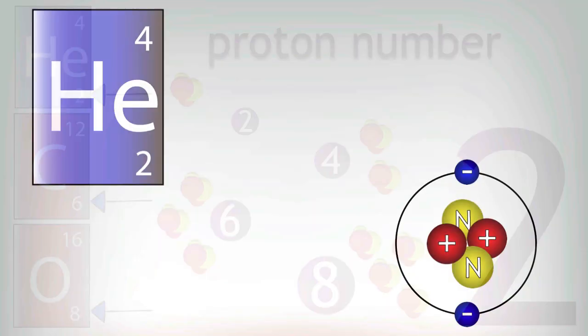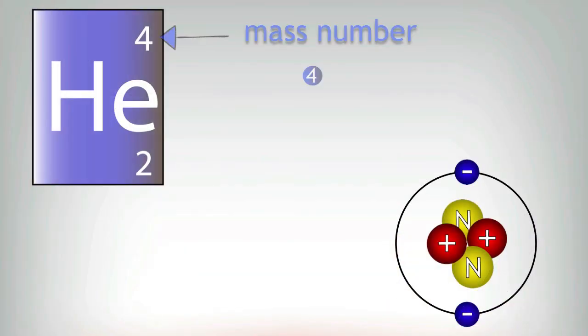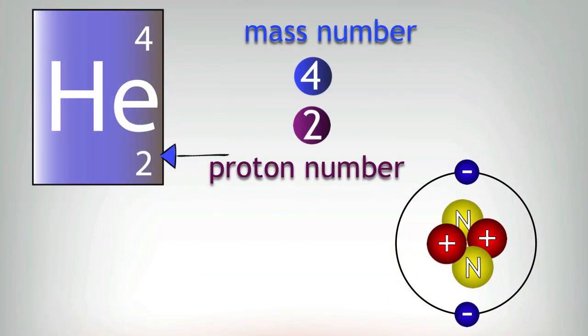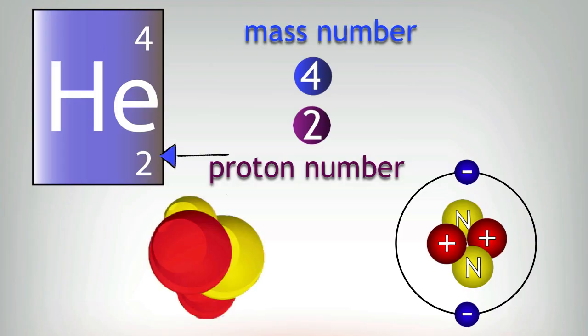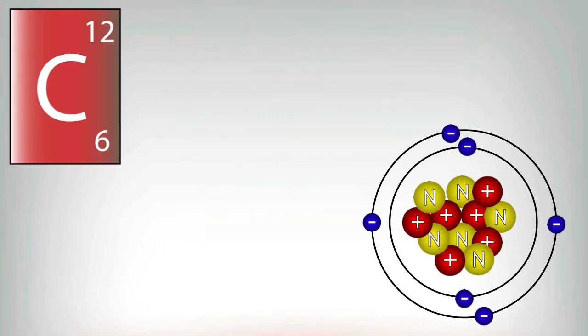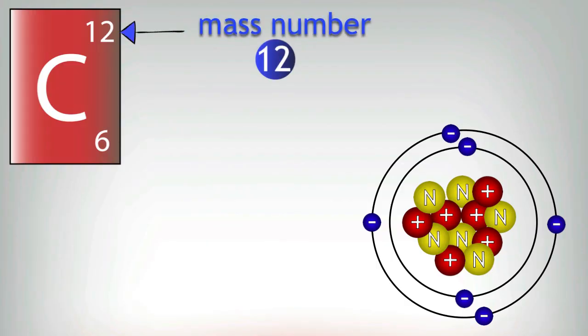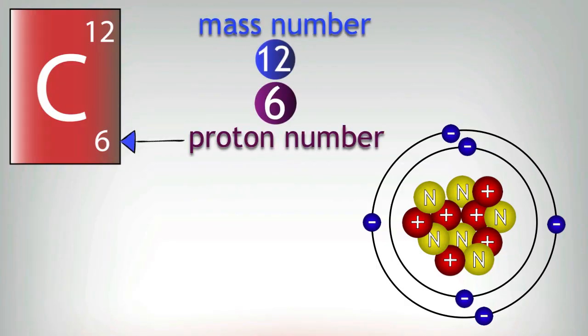Let's look at helium first. Helium has a mass number of four, a proton number of two. Now let's go on to carbon. Carbon has got a mass number of 12 and it's got a proton number of six.